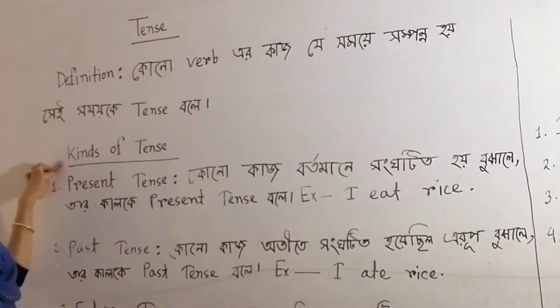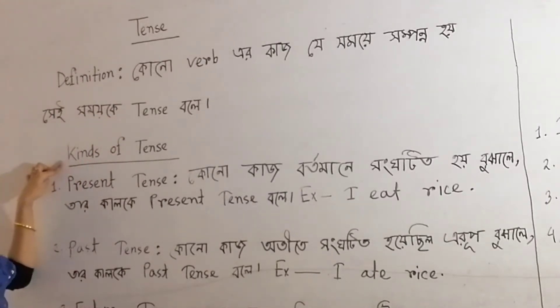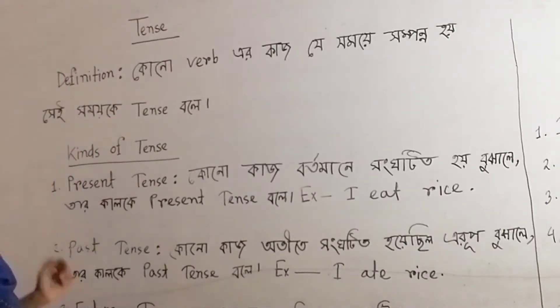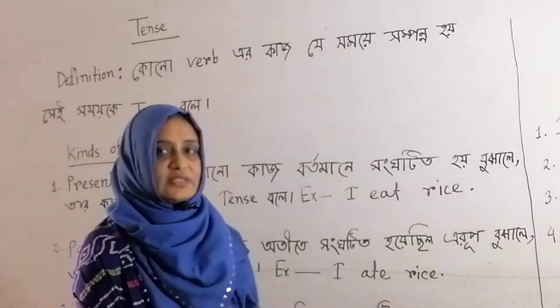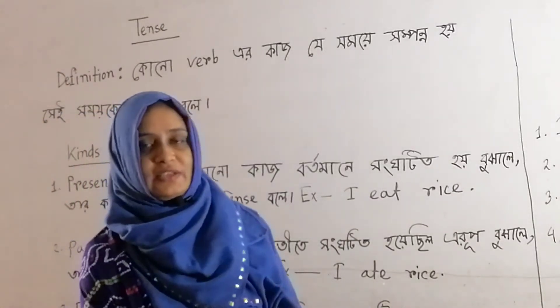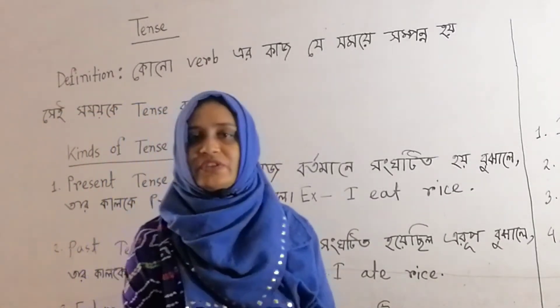Now come to the points — kinds of tenses. There are three kinds of tenses. These are present tense, past tense, and future tense.